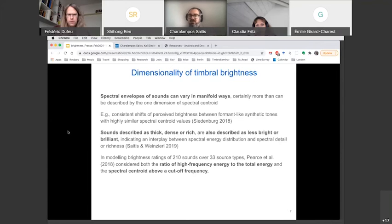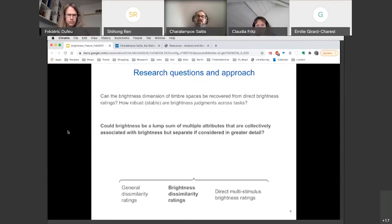In a project that I think two of our speakers, Mathieu later and George Fazekas tomorrow have been involved, Audio Commons, which was a European project involving some UK researchers, they tried to develop a model of brightness after collecting ratings on 210 sounds over 33 source types. So going a bit beyond the classic timbre research paradigm of single isolated notes played always at the same pitch. So they had different source types, including electronic sounds, and they varied more aspects than we usually do with timbre research. And so a model that explained well the ratings had the spectral centroid above the cutoff frequency. So not just the spectral centroid combined in a sort of linear model with the ratio of high frequency energy to the total energy. So our second question then was, could brightness be a lump sum of multiple attributes that are collectively associated with brightness, but separate if we consider them in greater detail? And this is why we then have the idea of collecting brightness dissimilarity ratings.